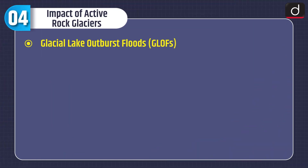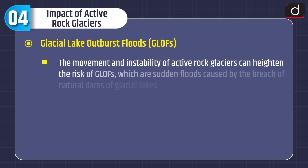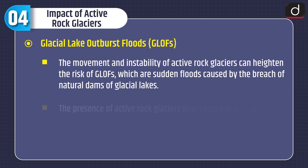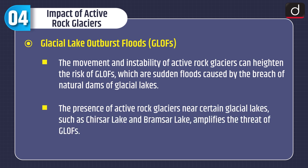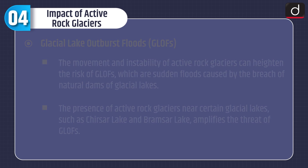Looking at the impact of active rock glaciers: Glacial Lake Outburst Floods, or GLOFs — the movement and instability of active rock glaciers can heighten the risk of GLOFs, which are sudden floods caused by the breach of natural dams of glacial lakes. The presence of active rock glaciers near certain glacial lakes, such as Chirsar Lake and Bramsar Lake, amplifies the threat of GLOFs.